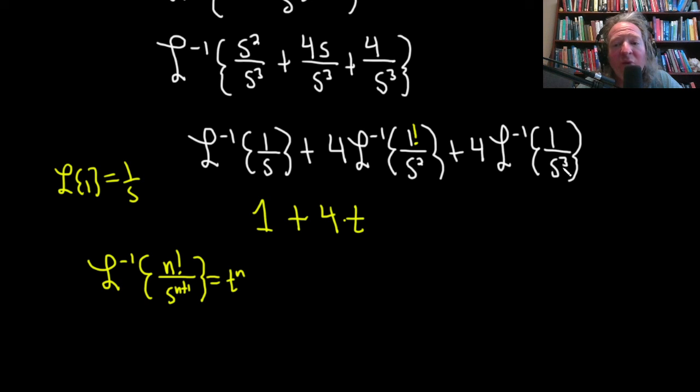Here, we have 1 over s cubed. Remember, it's 1 higher on the bottom, so we need a 2 factorial here. I'm just going to put it there in yellow, so I'm forcing it there as a 2 factorial. But if you put it there, you've got to take it away. We'll divide by it out here. So this is going to be plus 4 over 2 factorial is 4 over 2, which is 2, times, and again, applying this formula, it's going to be t to the n. n here is 2, so this is t squared.